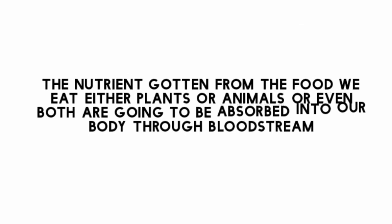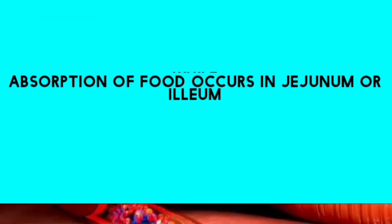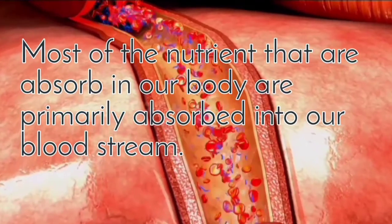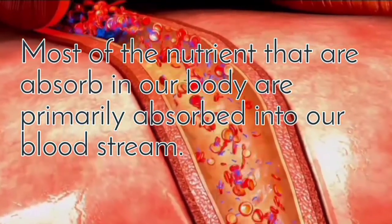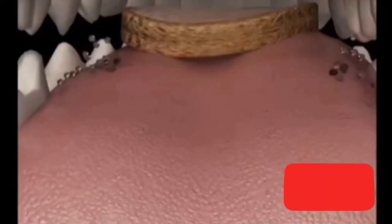The nutrients gotten from the food we eat — whether from plant, animal, or even bird — are going to be absorbed in the body through the bloodstream. Digestion of food occurs in the duodenum, while absorption of food occurs in the duodenum or ileum. Most nutrients absorbed in our body are primarily absorbed into our bloodstream.